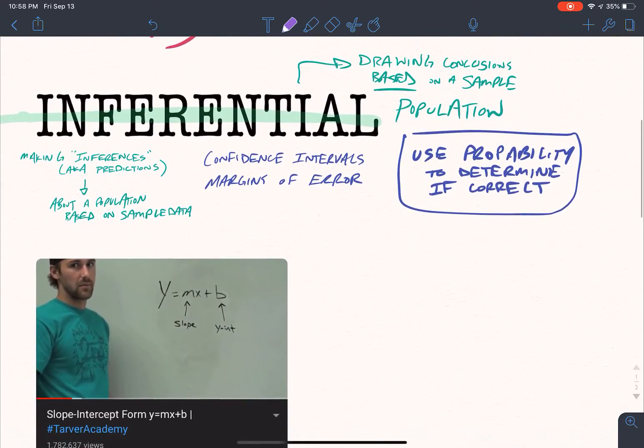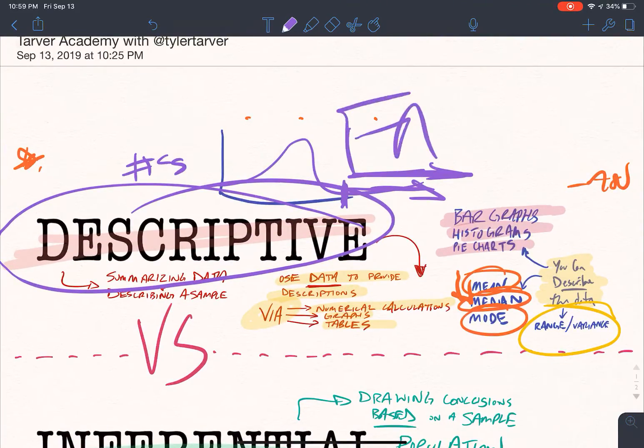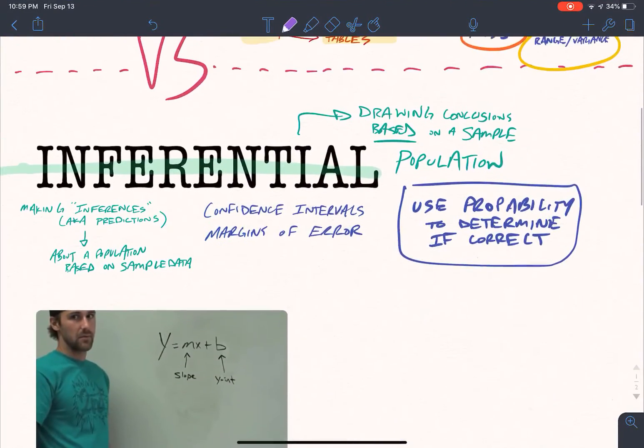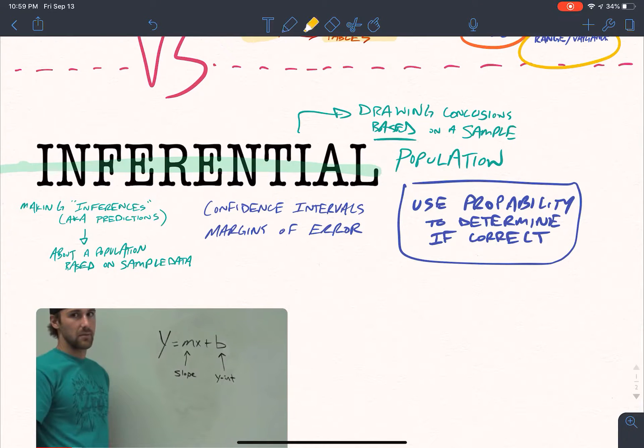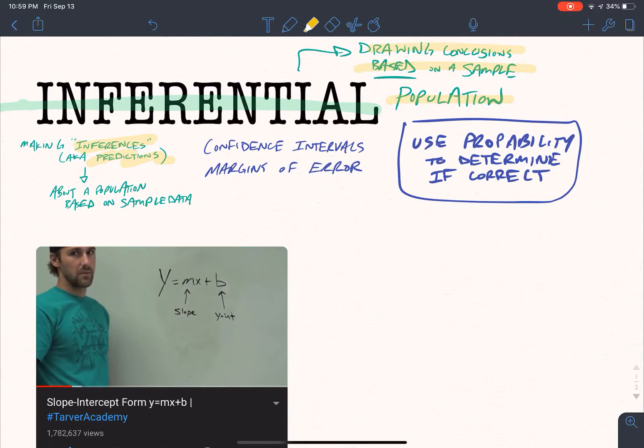So now let's look at inferential. Okay. Inferential, if descriptive is looking at the facts, you're looking at the facts here, then inferential, you're here, you're drawing conclusions based on a sample set population. So you're drawing conclusions based on what you see. Inferential means inferences. Okay. You're inferring something based on some predictions, right? This might not always be as accurate, but you're also going to get more insight out of it.